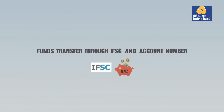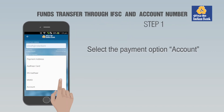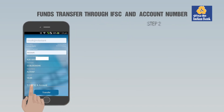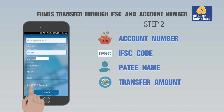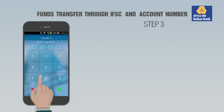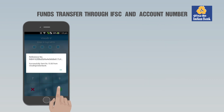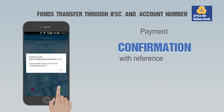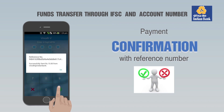Funds Transfer Through Account Number. Step 1: Select the Payment Option Account. Step 2: Enter the Account Number and IIN, Payee Name, Transfer Amount and Payment Remarks. Step 3: Enter the N-PIN for validation. Step 4: Payment confirmation with reference number and success or failure message will be displayed.